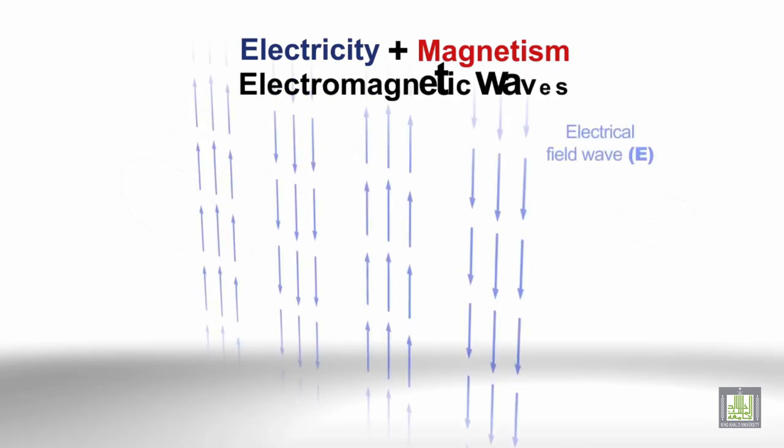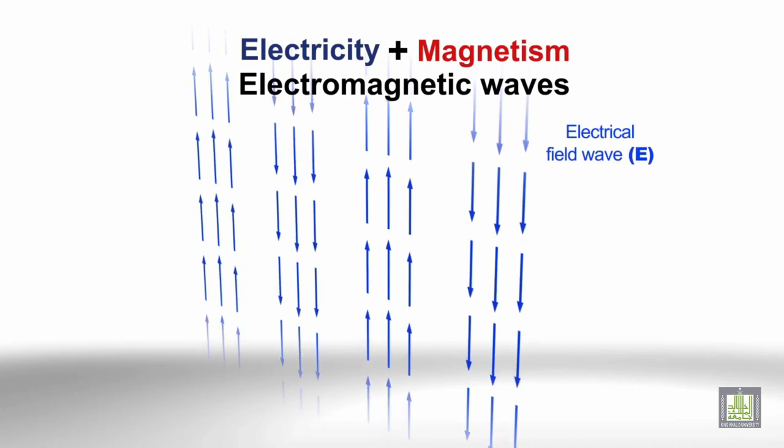But when they can change or move together, they make waves called electromagnetic waves.